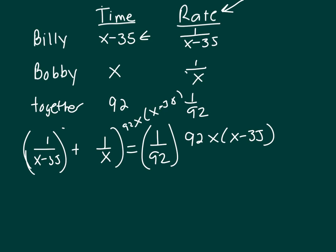So here, if you multiply this by 92X, X minus 35, the X minus 35's cancel and you're left with 92X times 1, which is 92X plus. Here the X's cancel and you're left with 92 times X minus 35.